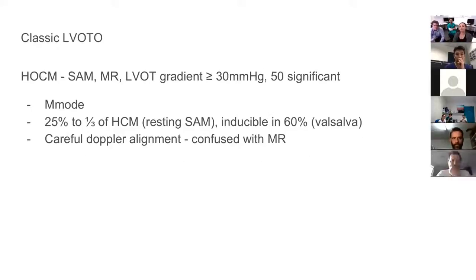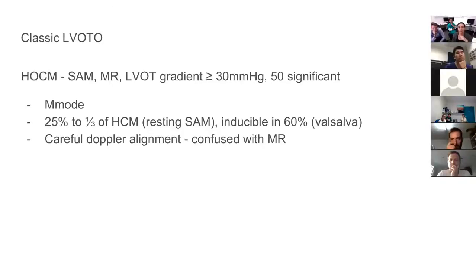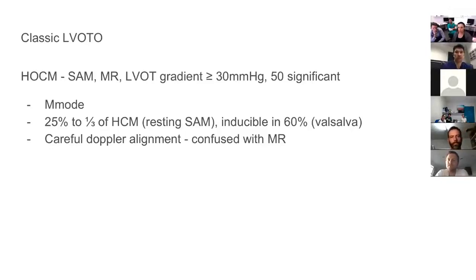The classic LVOT obstruction we learn about is hypertrophic cardiomyopathy plus outflow tract obstruction, usually related to SAM — systolic anterior motion of the mitral valve. This comes with associated MR. The cutoff gradient is 30 mmHg, but intervention isn't considered until about 50 mmHg — which might mean surgery. The best way to identify SAM is on M-mode. Classic LVOT obstruction is largely based on anatomical features, perhaps with some physiological priming such as Valsalva to provoke the gradient.